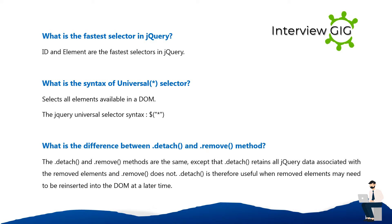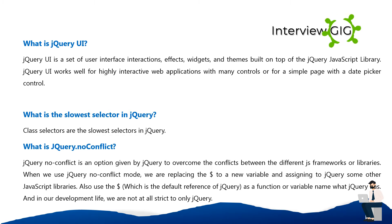What is the syntax of the universal selector? The universal selector selects all elements available in a DOM: $("*"). What is the difference between the detach() and remove() methods? Both are the same except that detach() retains all jQuery data associated with the removed elements, while remove() does not. Detach is useful when removed elements may need to be reinserted into the DOM later.